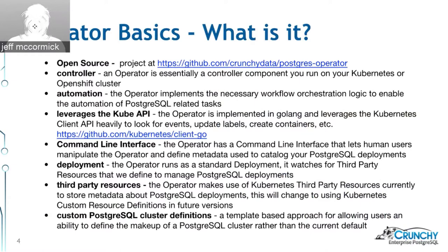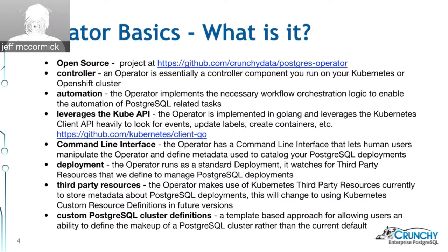You can also create objects on Kubernetes using that command line interface, which is the primary means for the Postgres operator to understand what you want it to do. The operator runs as a standard deployment on your OpenShift or Kubernetes environment. It watches for third-party resources — we've defined five or six different Postgres-related third-party resources — and when you create one called, say, PG cluster, the operator notices that event and takes action.